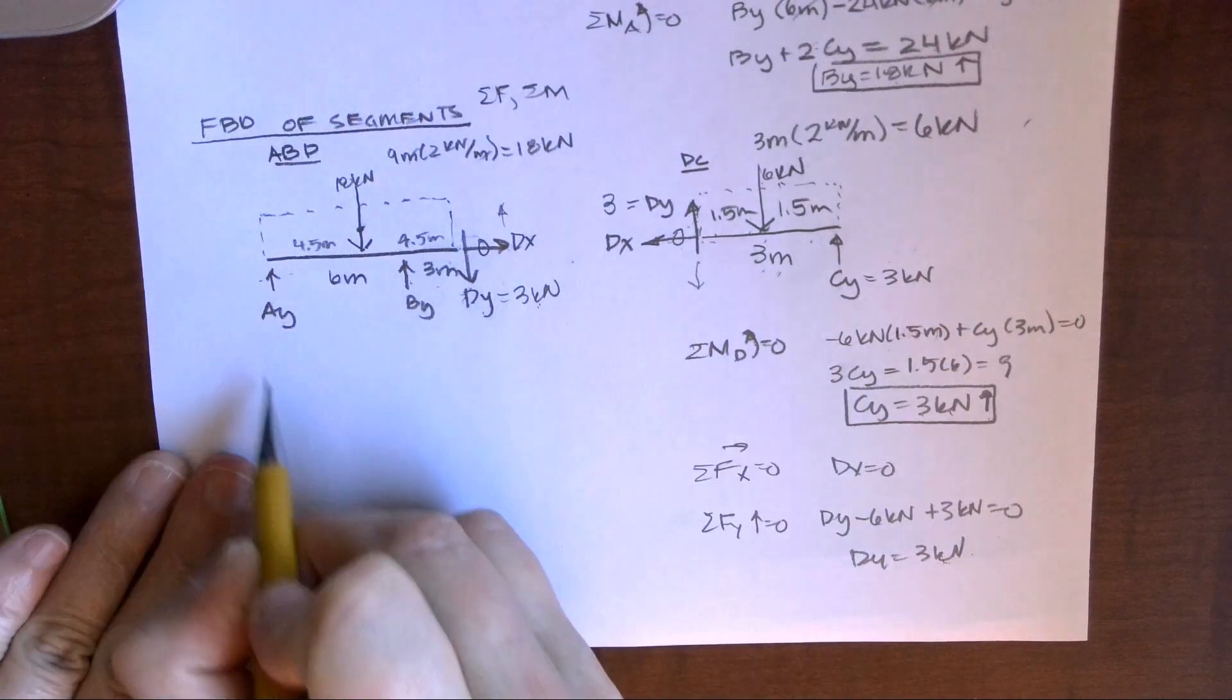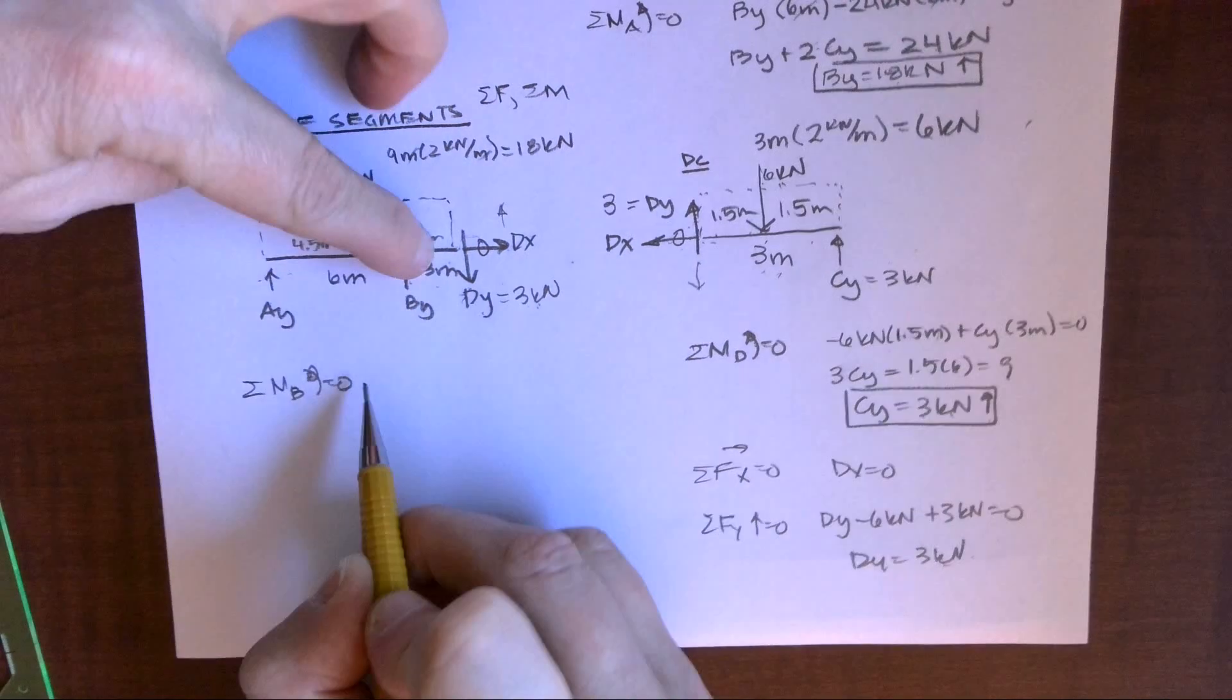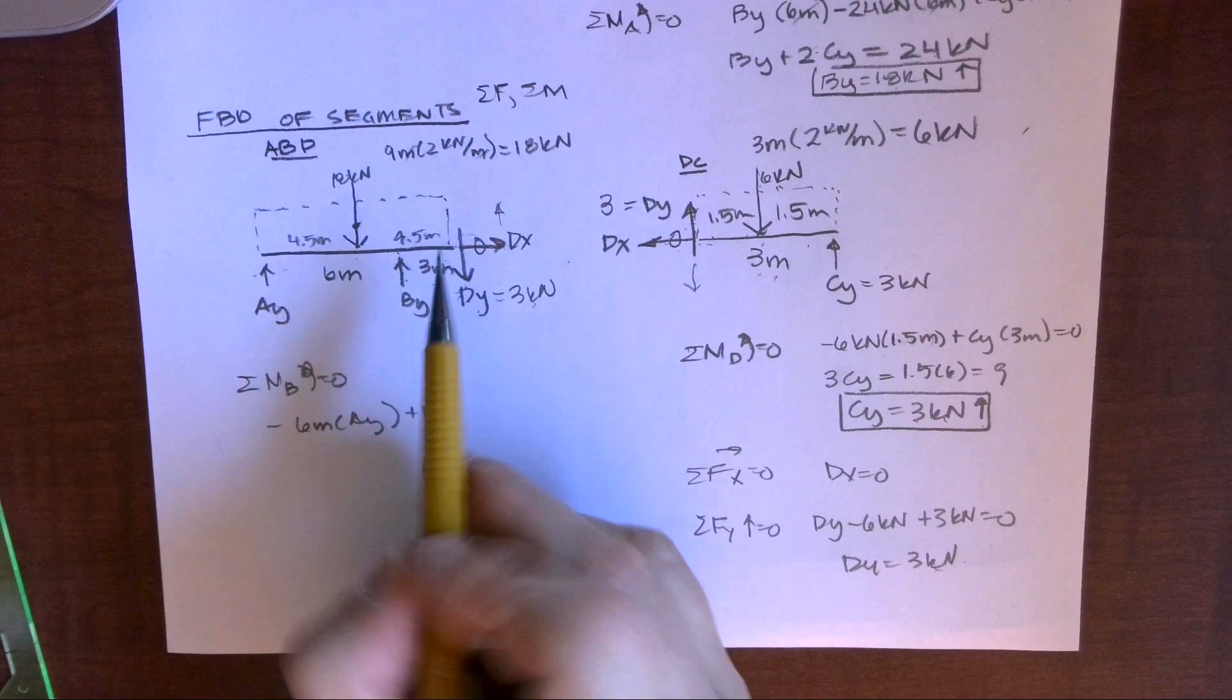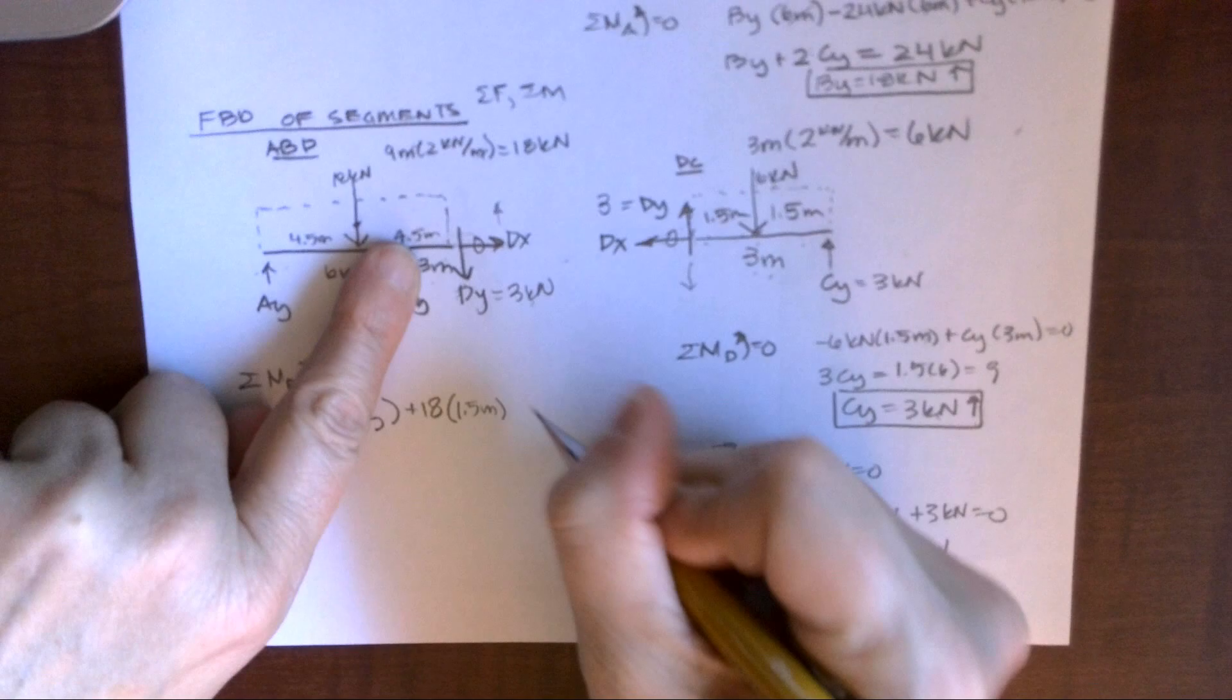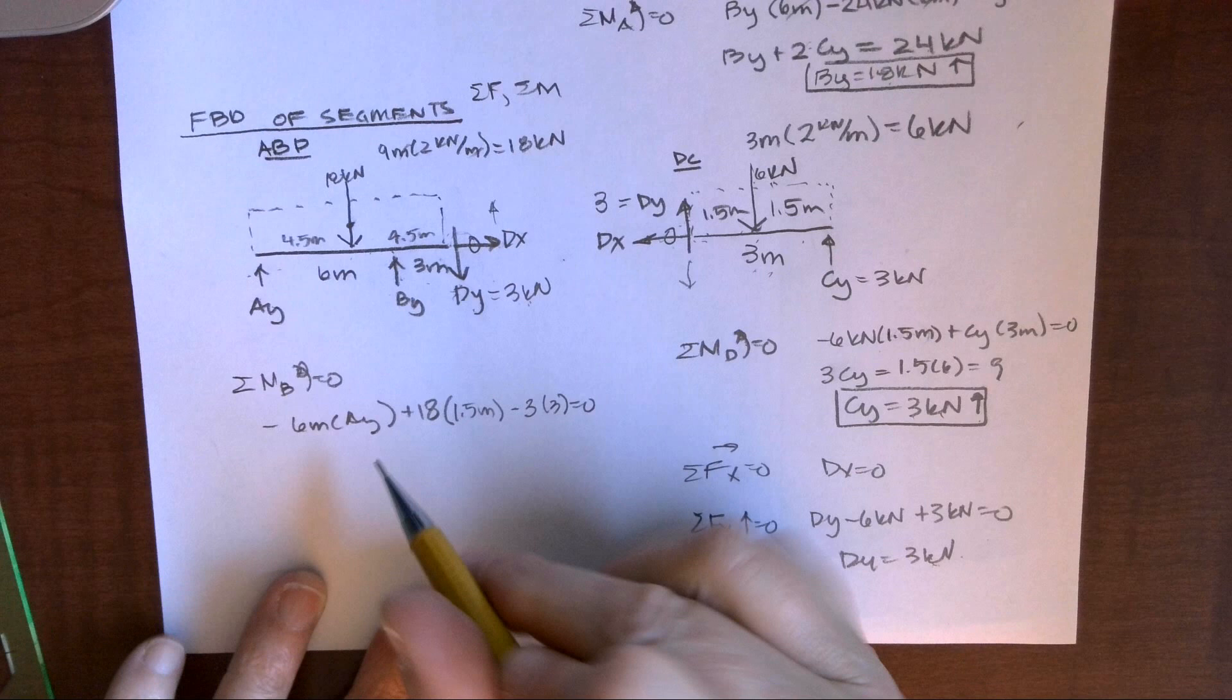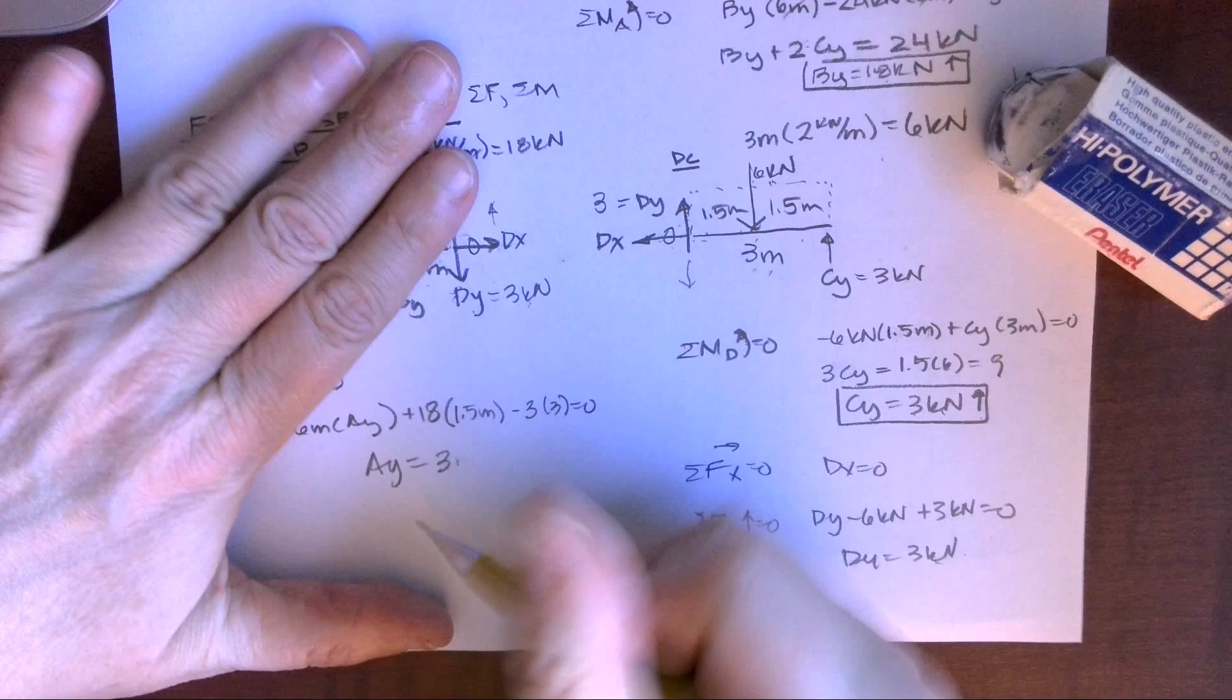Now that we have DY assigned to three kilonewtons, we could actually just look at our smaller segment. We could sum moments about B or A. Doesn't matter. I'm going to sum them about B. A equals zero, so I get negative six meters times AY plus 18 times, now I have to figure this out. This is three. This is 4.5. That's 1.5 meters. And then I'm going to get negative three, so that's clockwise rotation, times three equals zero. And hopefully, when I solve this out, I would find that AY equals three, not meters, three kilonewtons positive going up.